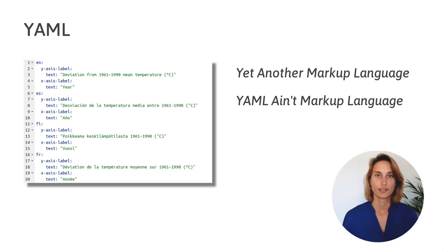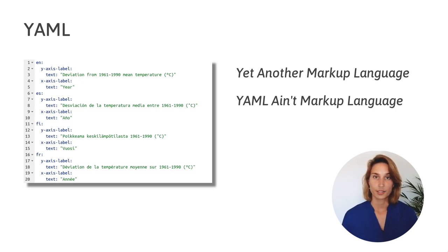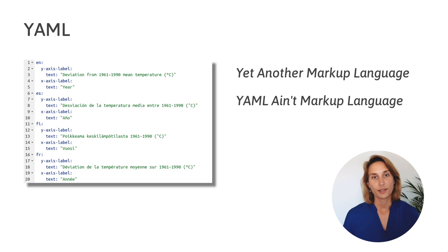On the left hand side here you can see an example from one of our YAML files. Each of the languages is denoted by an abbreviated two-letter word, for example, 'en' for English. Each of the labels that requires translation is assigned a variable name that's common across all of the languages, for example, x-axis label. The value for this label is then the text that is the translated string, for example, 'year', 'anno', or 'vorsi'.